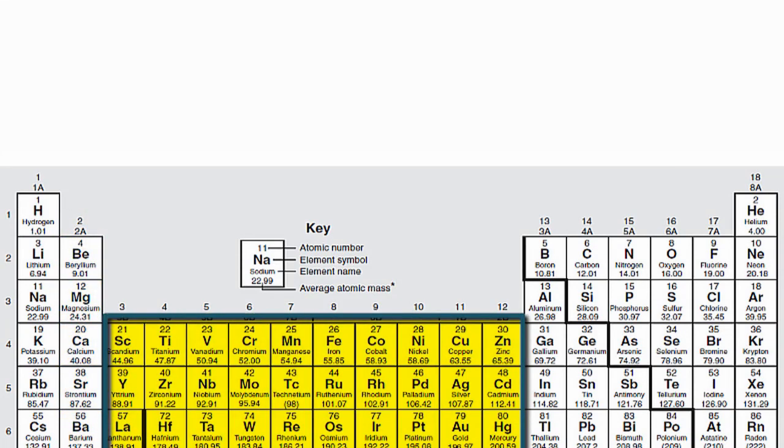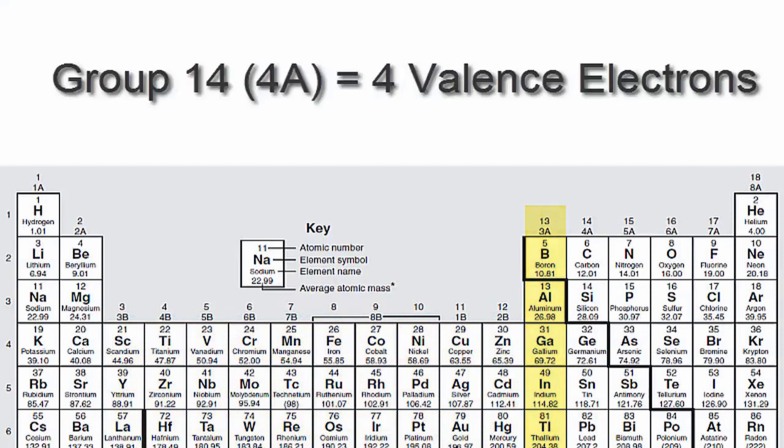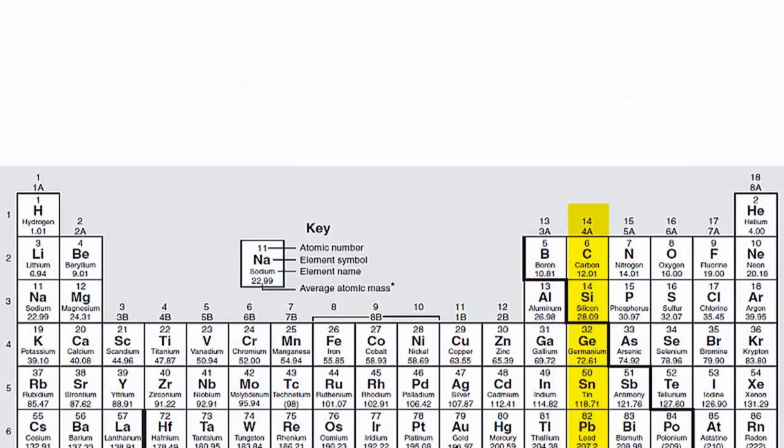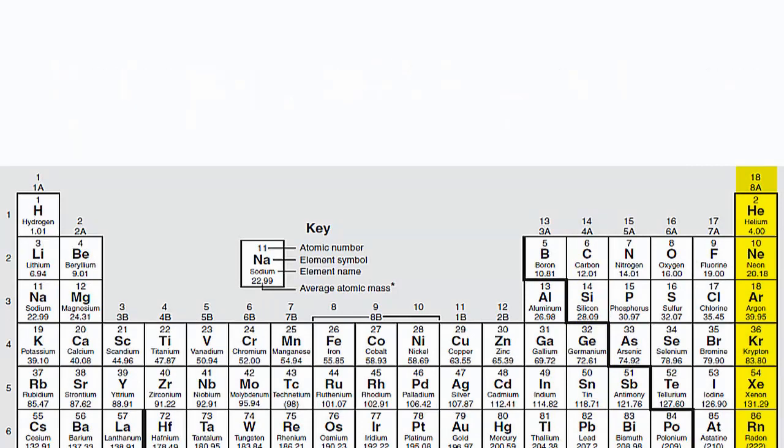We'll skip over the transition metals since they're a bit more complicated and probably don't apply to you. We'll go to 13 or 3A, which have three valence electrons, then 14 or 4A, which have four valence electrons, all the way up to group 18 or 8A, which have eight valence electrons.